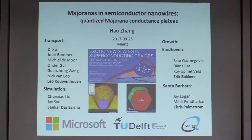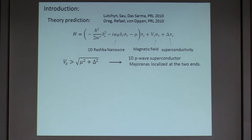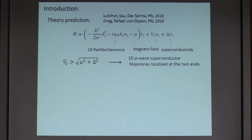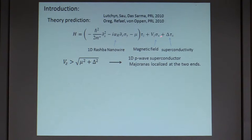A brief introduction about this field: it was started in 2010 by two theory groups — Tewari's group and one other — who came up with the one-dimensional Majorana Hamiltonian. If you look at the Hamiltonian, it's actually quite simple. One part is a basic one-dimensional nanowire; alpha_R is the spin-orbit interaction, so the nanowire has strong spin-orbit interaction. There is a Zeeman energy term, requiring only a magnetic field, and the last part is the superconductivity term with pair potential delta. The theory predicts that if the Zeeman energy is larger than sqrt(μ² + Δ²), you can drive this one-dimensional superconductor into an effective p-wave superconductor, and the two Majorana bound states will be localized at the ends.